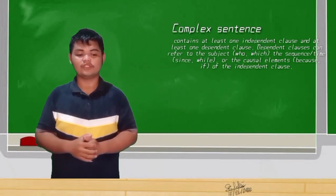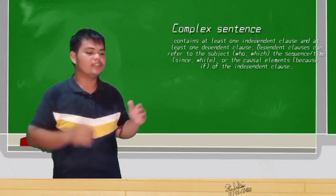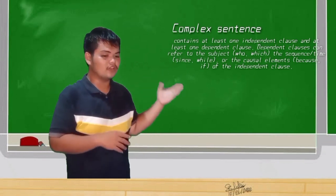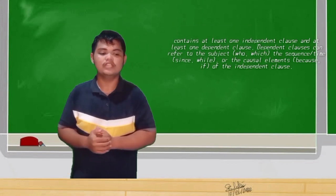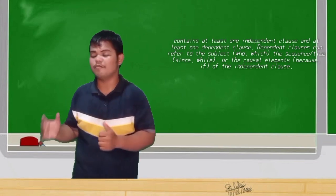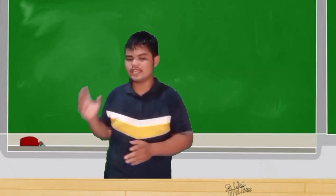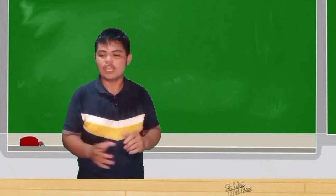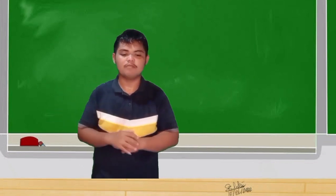The third type is the complex sentence. A complex sentence contains at least one independent clause and at least one dependent clause. The dependent clause can refer to the subject using 'who' or 'which,' or indicate sequence or time using 'since,' 'while,' or partial elements like 'because' and 'if.' If a sentence begins with a dependent clause, note the comma after the clause. If the sentence begins with an independent clause, there is no comma separating the two.